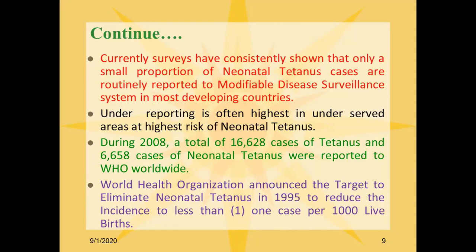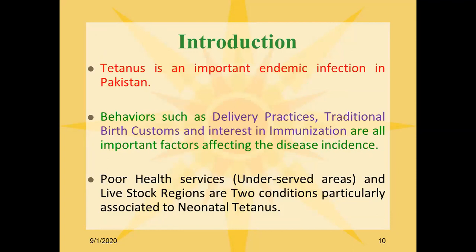Underreporting means the actual number is not being identified. During 2008, a total of 16,628 cases of tetanus and 606,058 cases of neonatal tetanus were reported to WHO worldwide. The World Health Organization announced a target to eliminate neonatal tetanus in 1995, aiming to reduce the incidence to less than one case per 1,000 live births. Tetanus is an important endemic infection in Pakistan.